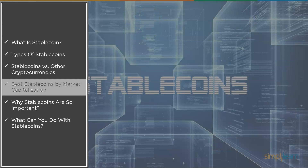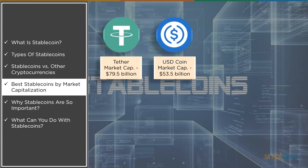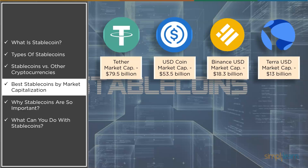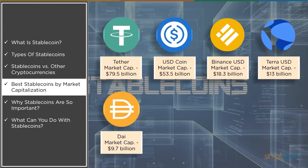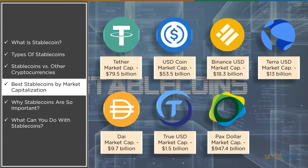Now let's look at some of the best stablecoins according to market capitalization. First, Tether with a market cap of $79.5 billion. Then USD Coin with $53.5 billion. Binance USD with $18.3 billion. Terra USD with $13 billion. DAI with $9.7 billion. TrueUSD with $1.5 billion. And PAX Dollar with a market capitalization of $947.4 million.